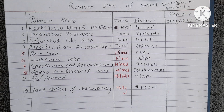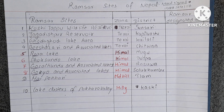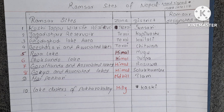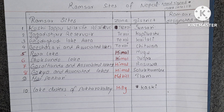Let's begin with the Ramsar Sites of Nepal. Nepal has 10 Ramsar Sites: Kositapu Wildlife Reserve, Jagadishpur Reservoir, Godagodi Lake Area, 20,000 Lakes (associated lakes), Rara Lake, Phoksundo Lake, Gosaikunda and Associated Lakes, Gokyo and Associated Lakes, Mai Pokhari, and finally Lake Cluster of Pokhara Valley.